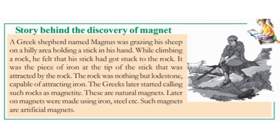Now the story behind the discovery of the magnet. A Greek shepherd named Magnus was grazing his sheep on a hilly area holding a stick in his hand. While climbing a rock, he felt that the stick had gone stuck to the rock. It was the piece of iron at the tip of the stick that was attracted by the rock. The rock was capable of attracting iron. The Greeks later started calling such rocks magnetite — these are natural magnets. Later, magnets were made using iron and steel — such magnets are artificial magnets.